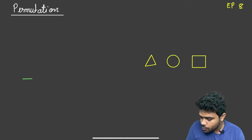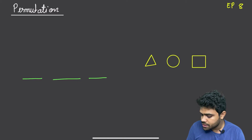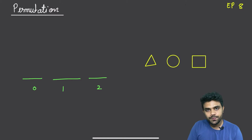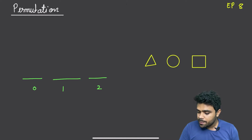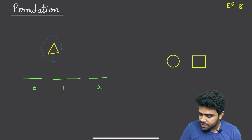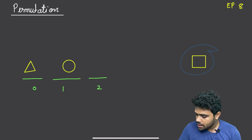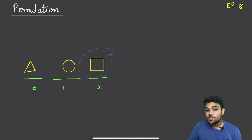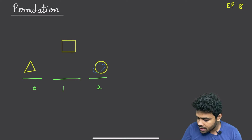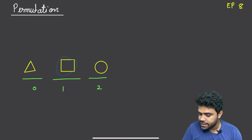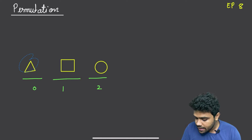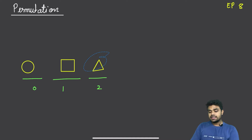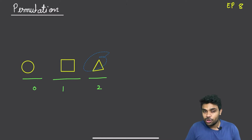To arrange them, we will have three positions: position zero, position one, and position two. Let us try to keep these elements one by one at all of these positions. This is one possible arrangement. We can also swap so the square comes to position zero and the circle goes to another position. Different ways of arranging these elements is called permutation.